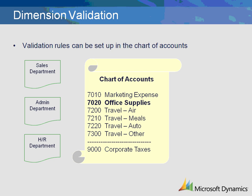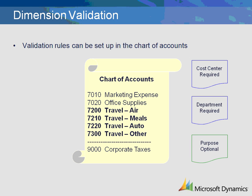Office Supplies can be used by Sales, Admin, or HR. We can create validation lists allowing any of the three departments to be used with the Office Supplies account. Travel expenses must always have a location and department specified — these two dimensions can be set up as required for the travel accounts, and the purpose dimension can be set up as optional. When processing transactions in Microsoft Dynamics AX, the user will not be allowed to post a transaction to the travel accounts without specifying both the cost center and the department.